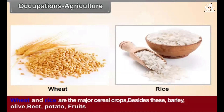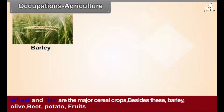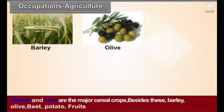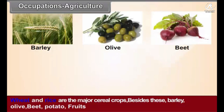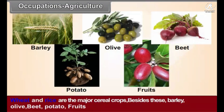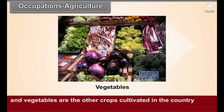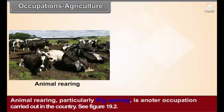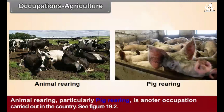Wheat and rice are the major cereal crops. Besides these, barley, olive, beet, potato, fruits, and vegetables are the other crops cultivated in the country. Animal rearing, particularly pig rearing, is another occupation carried out in the country.